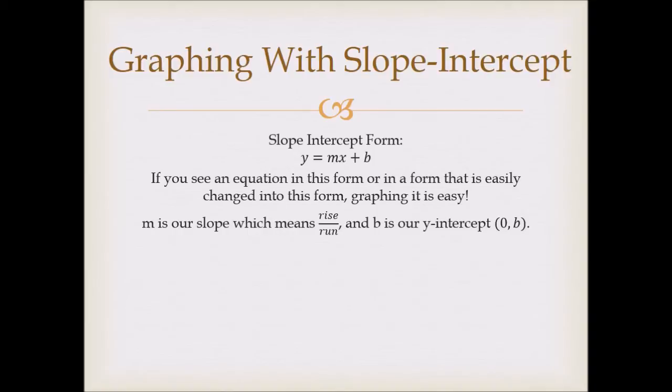We're going to have to know what each part means. So m represents our slope, which is considered rise over run. So rise, that means either up or down, and run means left or right. And b is our y-intercept. So the y-intercept is anywhere at 0, b, whatever b is.